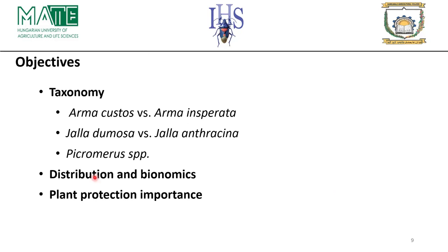The objectives of today's presentation are to review the taxonomy of Arma custos and Arma inspirata, followed by Zicrona and Zicrona antracina. We will also compare the taxonomy of the Picromerus species: P. bidens, P. conformis, and P. nigridans. Additionally, we will examine the distribution and bionomics of European Asopinae, and review the plant protection importance of the mentioned species.